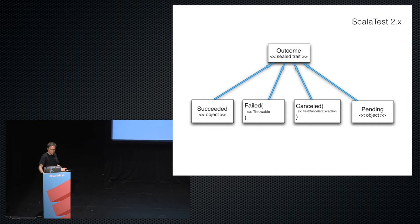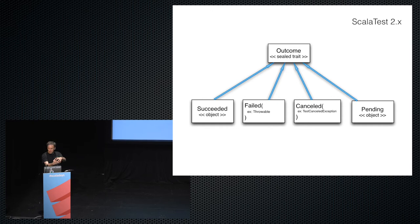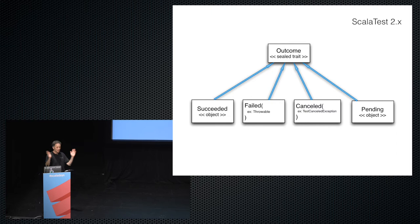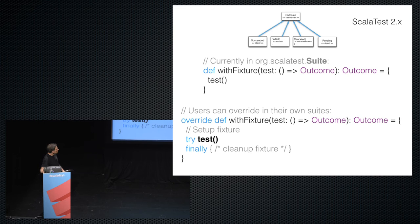To give some background before getting into the async stuff: there's an ADT in ScalaTest that represents the result of a test — an Outcome. It's either Succeeded (a singleton object with no extra information), Pending (also a singleton, meaning not yet implemented), or Failed/Canceled, which contains an exception with a stack trace and a hint of what the problem was, like 'one did not equal two'.